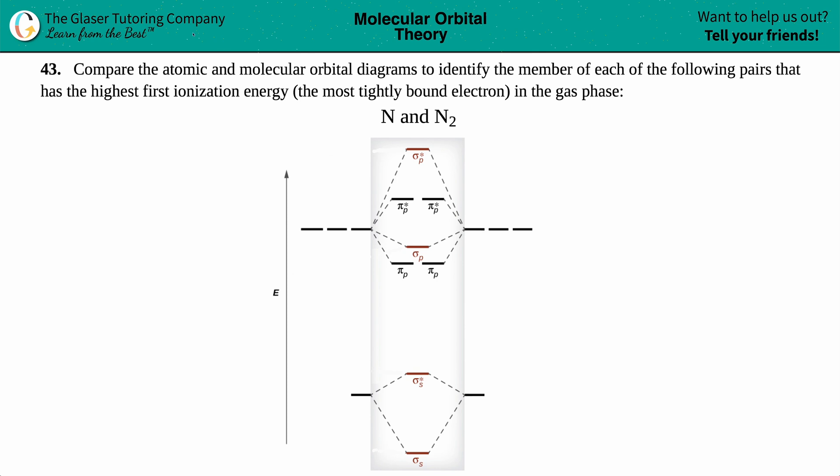Number 43, compare the atomic and molecular orbital diagrams to identify the member of each of the following pairs that has the highest first ionization energy. That's the most tightly bound electron in the gas phase. And then we have just nitrogen, or we have N2, the molecule.